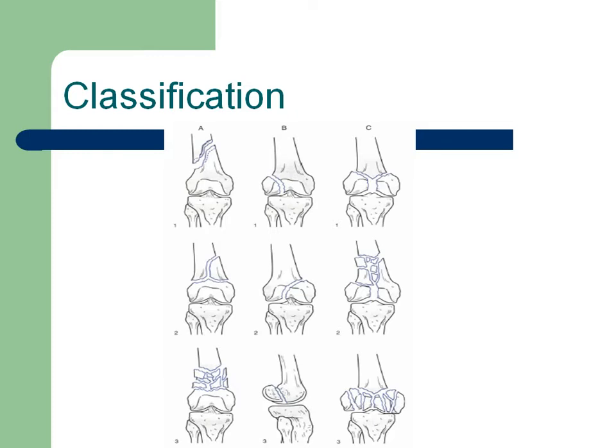In Type B, we have single condylar damage — medial or lateral condylar — or posterior condylar, referred to in the literature as a Hoffa fracture. In Type C, we have bicondylar fracture as a T-fracture. Type C2 has a comminuted fracture but the condyles are in two fragments, and in Type C3 we have comminuted parts throughout.